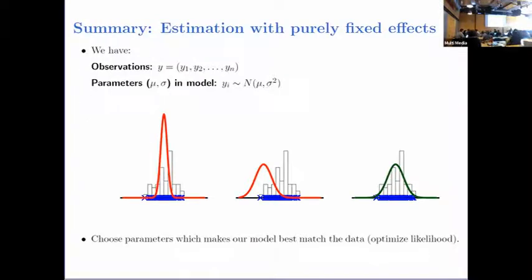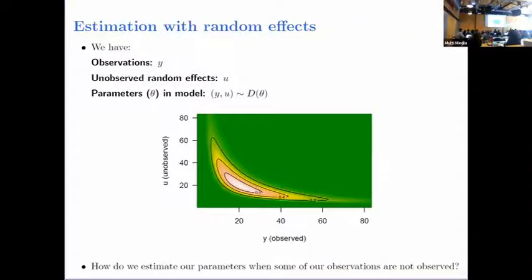When we estimate from normal observations, we have a model — in this case a normal distribution — and we tweak the parameters to match the data. When we also have unobserved random variables, it's more complicated. Imagine all the unobserved stuff on one axis and everything observed on another, with model parameters determining the shape of a banana in the middle. To estimate model parameters, we need to integrate out the unobserved dimension to get the marginal distribution.